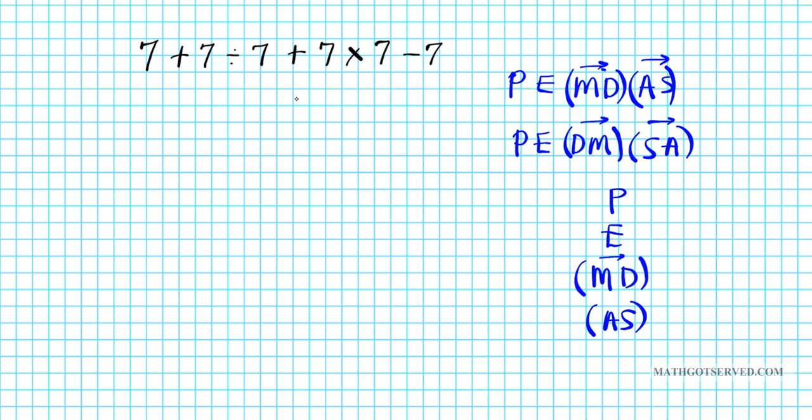Now this problem also highlights the power of the P in PEMDAS, which is the parenthesis. If I grouped the operations properly in this problem, then it's very easy to determine what to do first. Now since we do not have any parenthesis, we have to follow the order of operations.